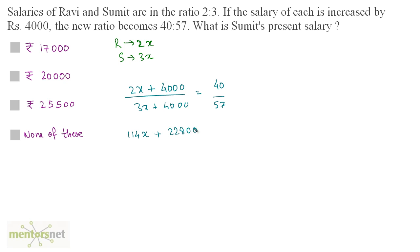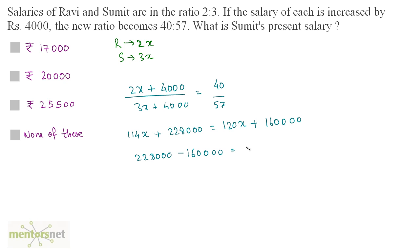So we have 57 times 2x is 114x, plus 57 times 4000 is 228000, equals 40 times 3x which is 120x, plus 40 times 4000 is 160000. So 228000 minus 160000 is equals to 120x minus 114x. So we have 68000 is equals to 6x.